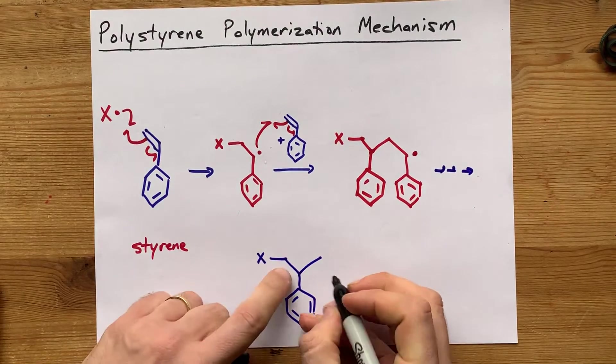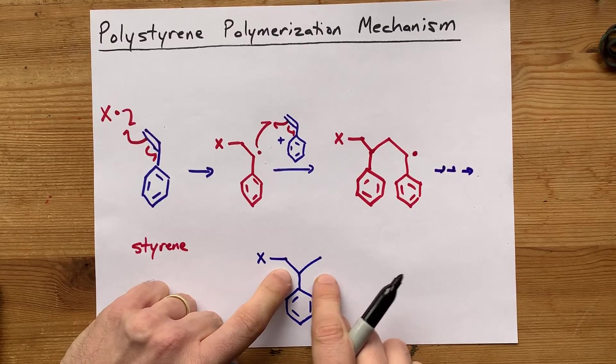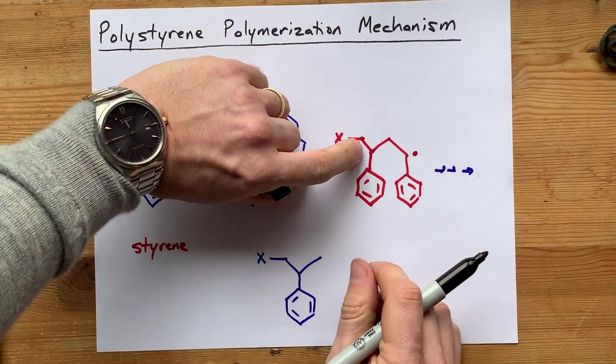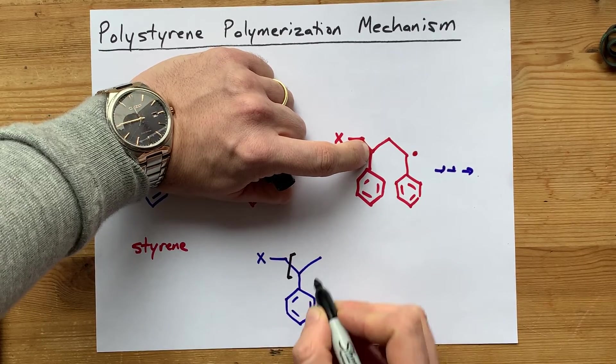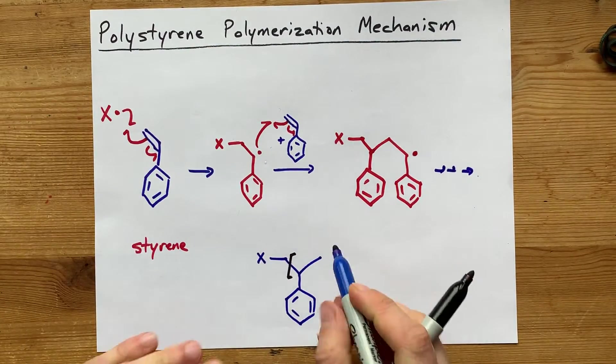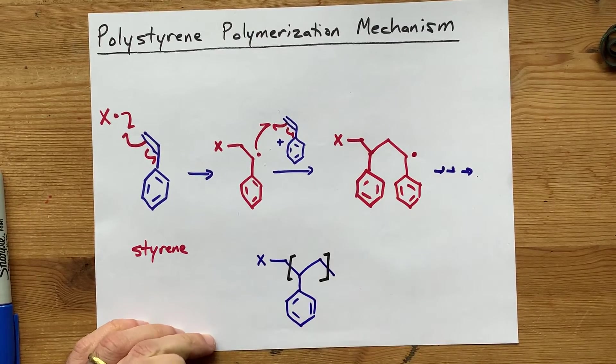I just want to make sure that I'm cutting this off in the right place. So that has a phenyl group at the beginning. Then it's going to be connected to another carbon, to another carbon, and over and over and over again.